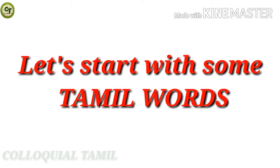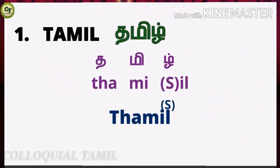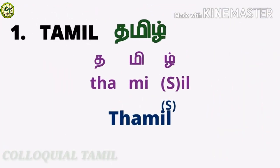Welcome to my channel. Let's start with some Tamil words. Our first word is 'Tamil.' This letter is 'அ' — it is a short vowel letter. The time taken to pronounce it is a blink of an eye or snapping fingers once. This is 'மி', which is also a short sound letter.